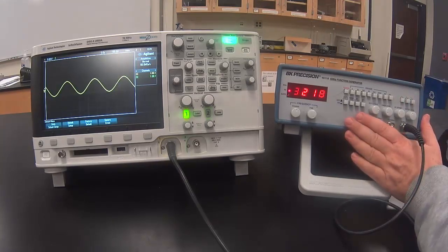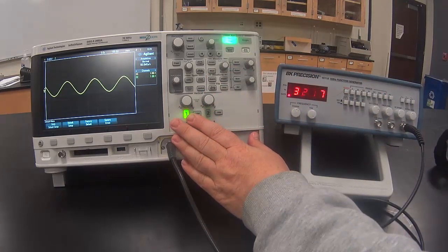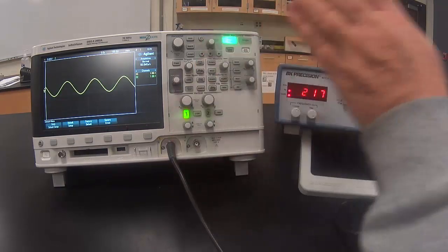The function generator is being used to create a signal that we want to measure. And the oscilloscope is the tool we are using to measure it.